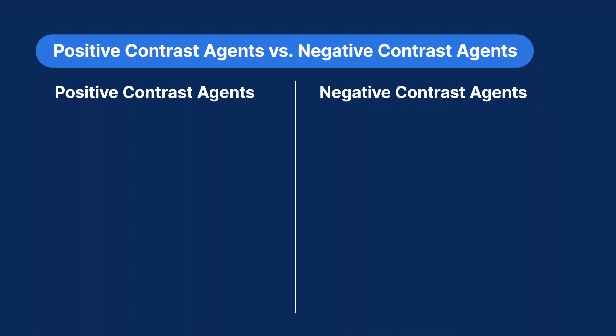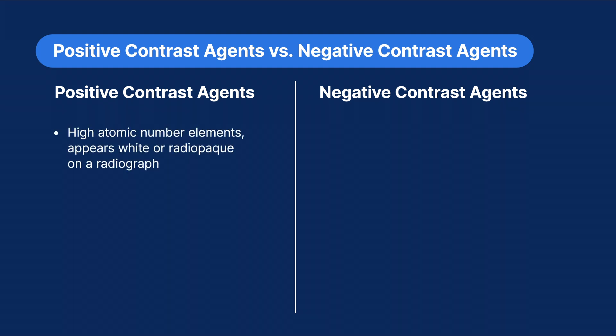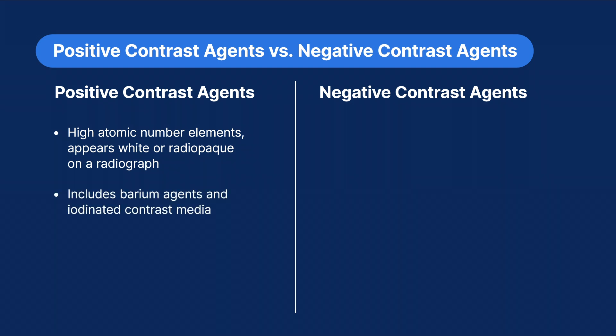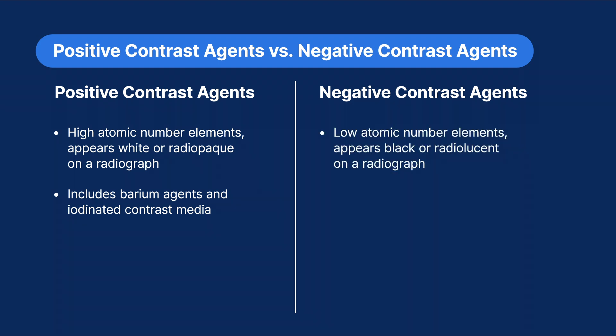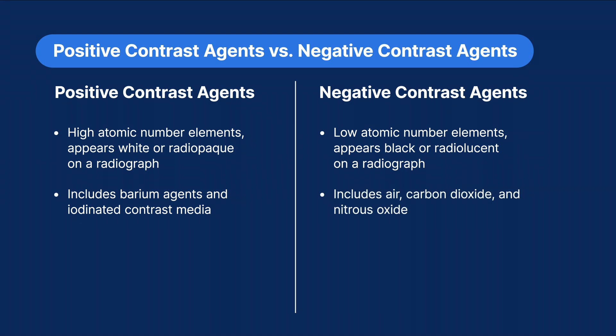To summarize: positive contrast agents are comprised of high atomic number elements, which causes them to appear white or radiopaque on a radiograph. They include barium agents and iodinated contrast media. Negative contrast agents are comprised of low atomic number elements. They appear black or radiolucent on a radiograph, and they include air, carbon dioxide, and nitrous oxide.